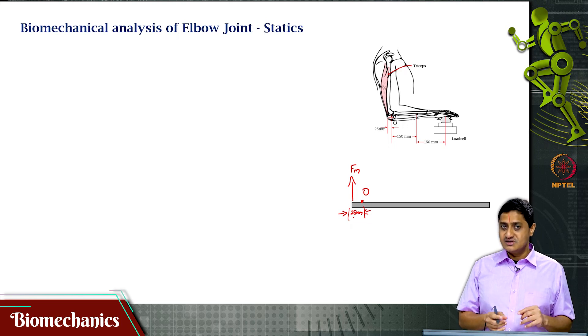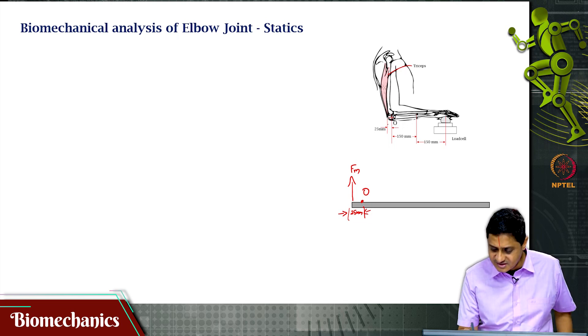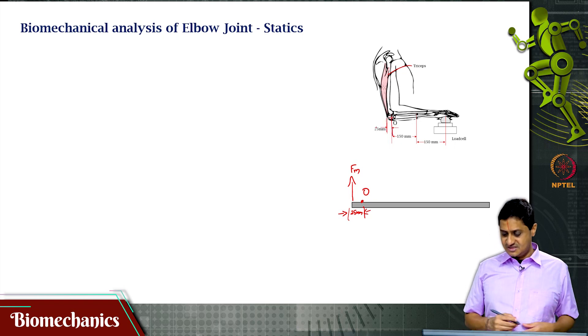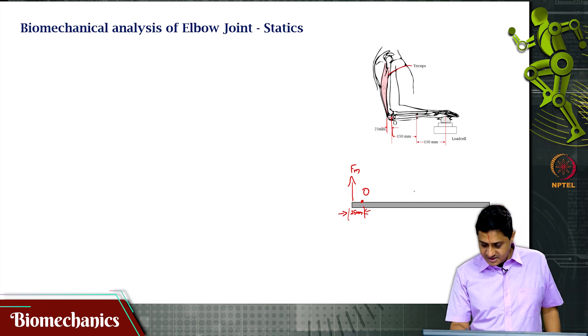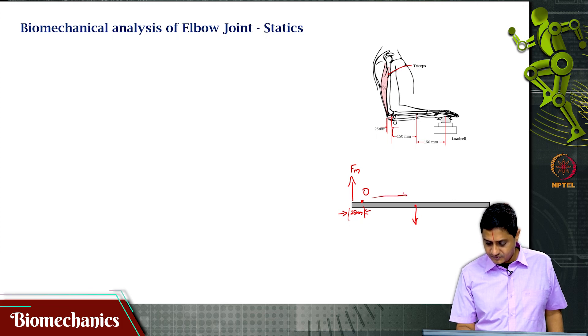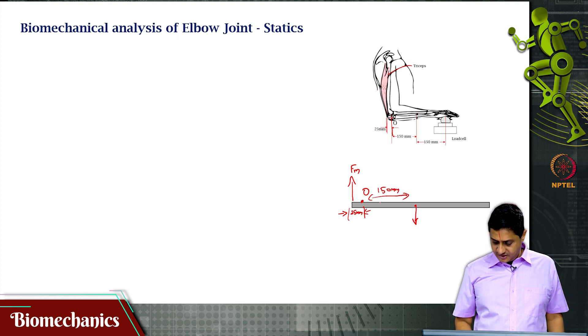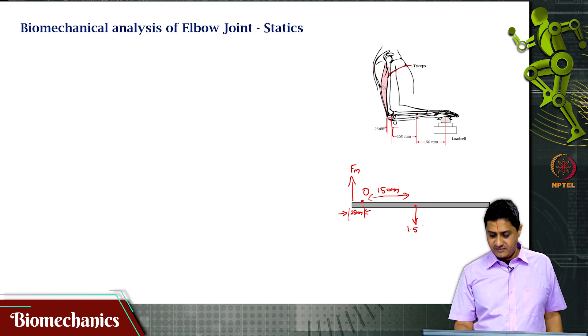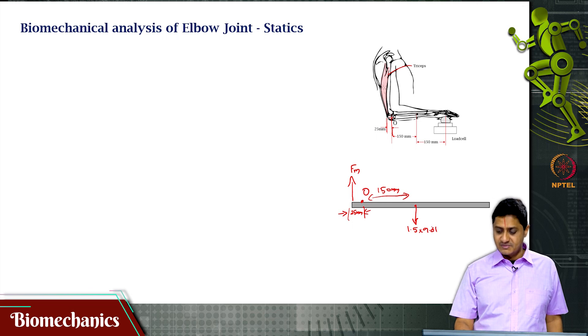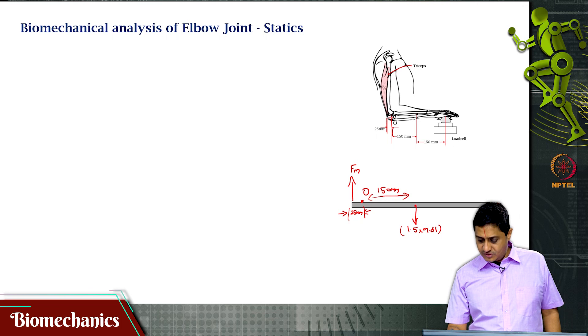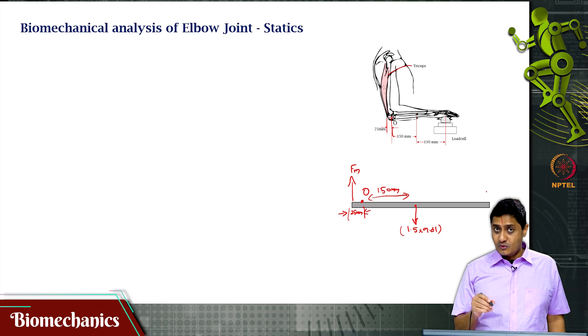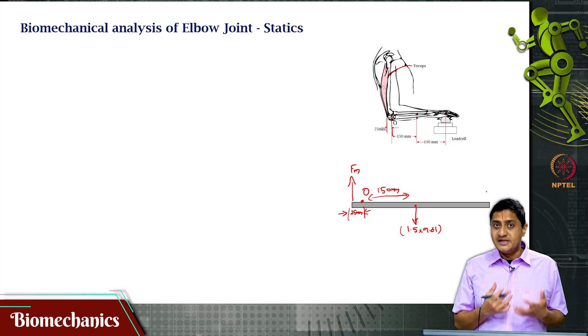The point of insertion of the triceps muscle is at a distance of 25 mm from the elbow joint. Remember, this is something that might vary as a function of joint angle, configuration, and many different things. But for this problem, this is already given. At a distance of 150 mm, the weight of the arm is acting and that weight is given to be 1.5 times 9.81. 1.5 kg is the mass. This is the weight in newtons. On the load cell.